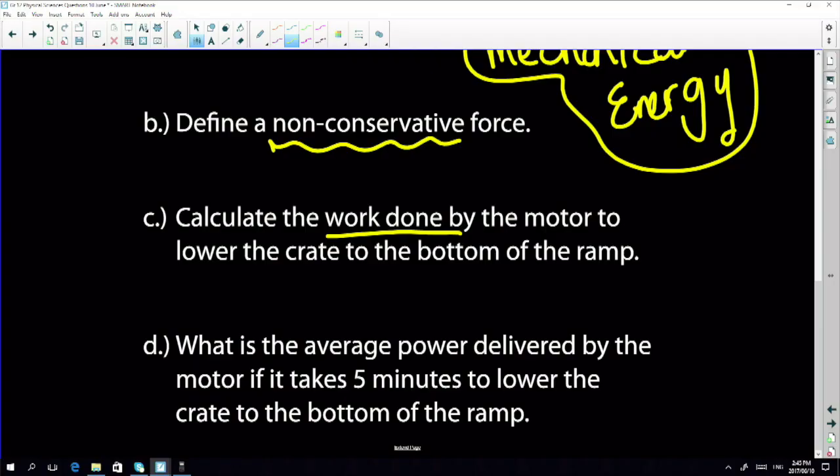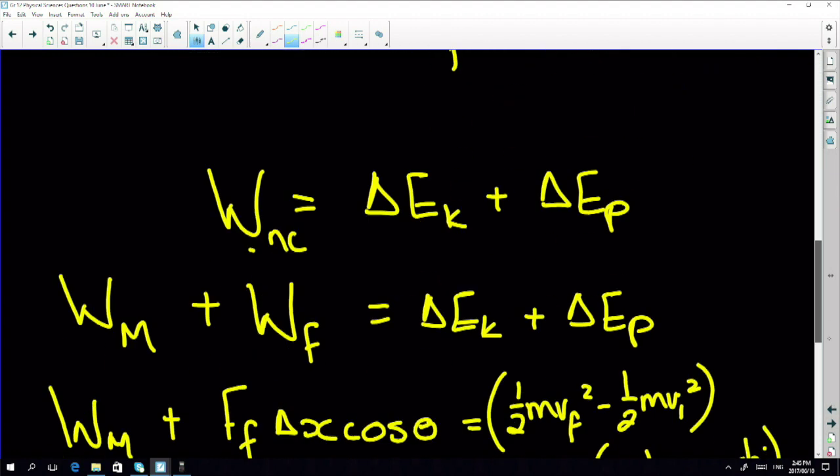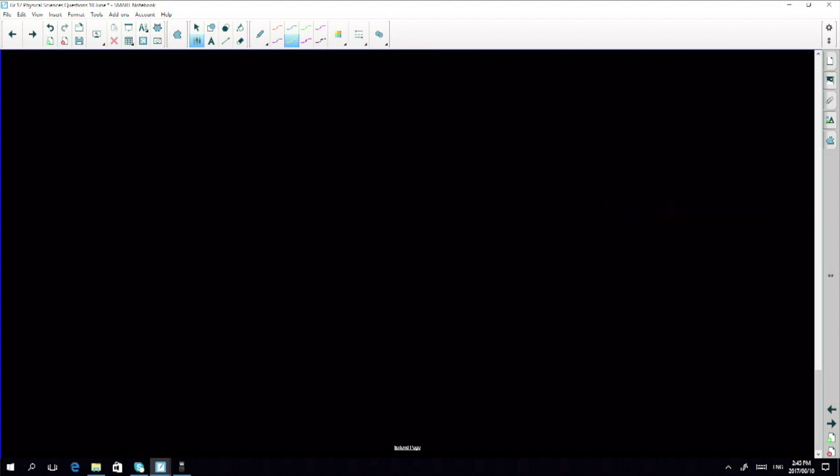The last question asks you what is the average power delivered by the motor. It takes five minutes to lower the crate to the bottom of the ramp. My first thought is to use P equals F times v average. The problem is you can only use this equation if your velocity is constant.